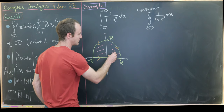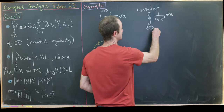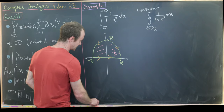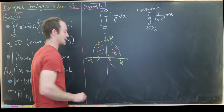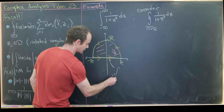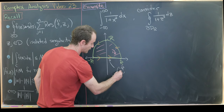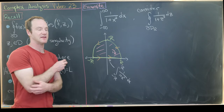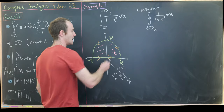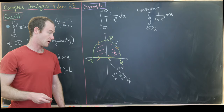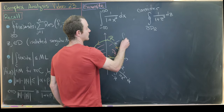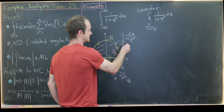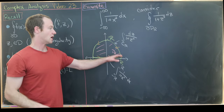We call this D sub R since it depends on the radius R. This boundary breaks into two pieces: the bottom edge is the integral from −R to R of 1 over (1 + x²) dx, because along the real axis the imaginary part is zero. The upper piece is the integral of 1 over (1 + z²) dz over C_R, the semicircle of radius R.